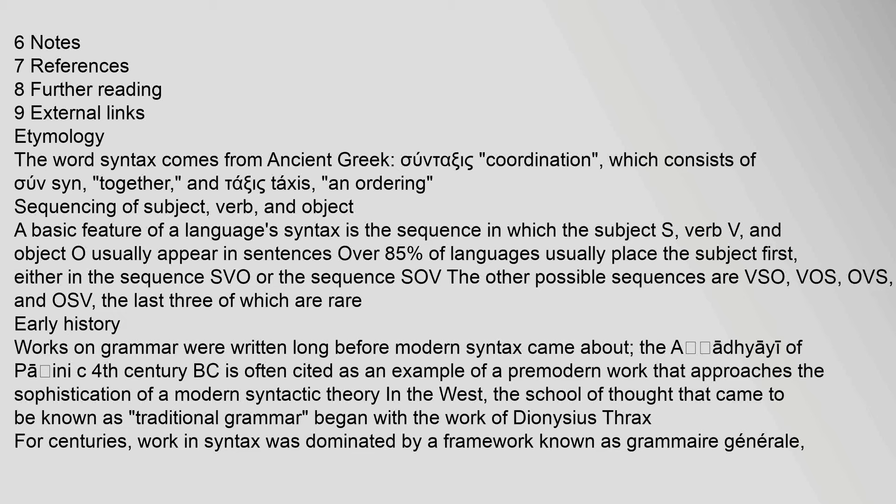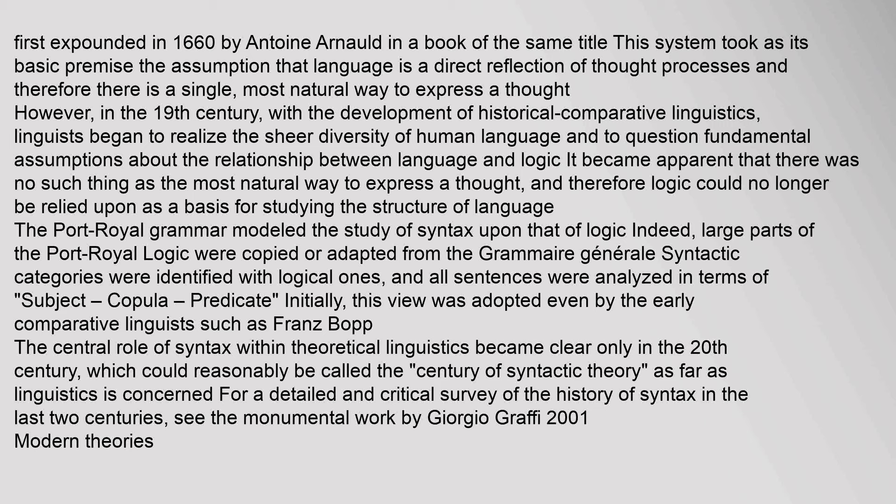Early history: Works on grammar were written long before modern syntax came about. The Ashtadhyayi of Panini (c. fourth century BC) is often cited as an example of a premodern work that approaches the sophistication of a modern syntactic theory. In the West, the school of thought known as 'traditional grammar' began with the work of Dionysius Thrax. For centuries, work in syntax was dominated by a framework known as Grammaire générale, first expounded in 1660 by Antoine Arnauld. This system took as its basic premise the assumption that language is a direct reflection of thought processes, and therefore there is a single, most natural way to express a thought.